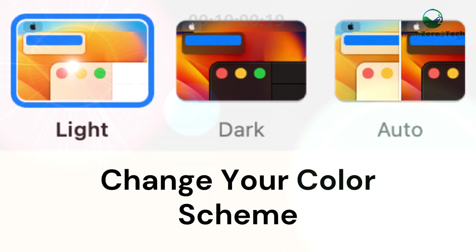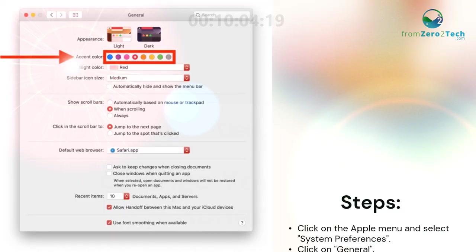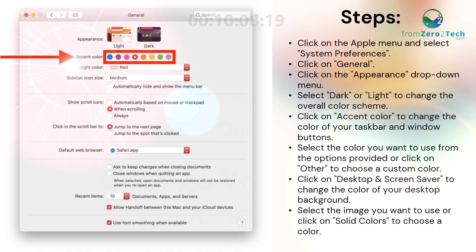Change your color scheme. Click on the Apple menu and select System Preferences. Click on General. Click on the Appearance drop-down menu and select Dark or Light to change the overall color scheme. Click on Accent Color to change the color of your taskbar and window buttons. Select the color you want to use from the options provided, or click on Other to choose a custom color. Click on Desktop and Screen Saver to change the color of your desktop background, then select the image you want to use or click on Solid Colors to choose a color.